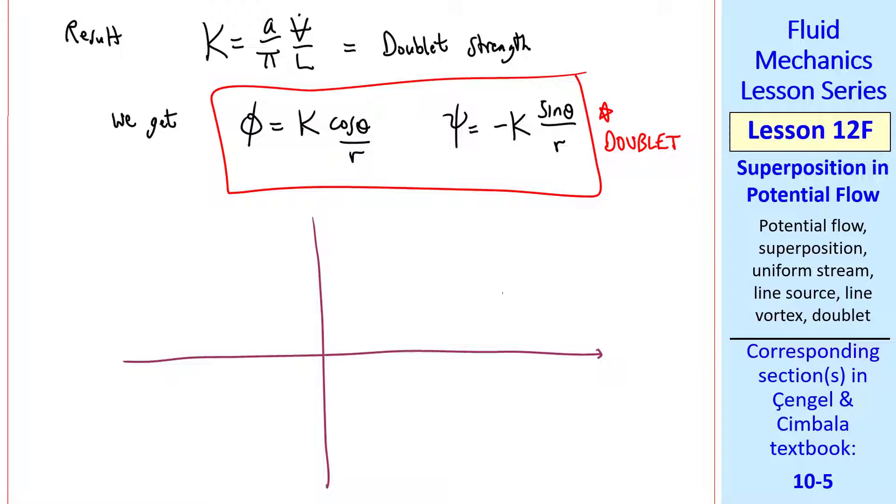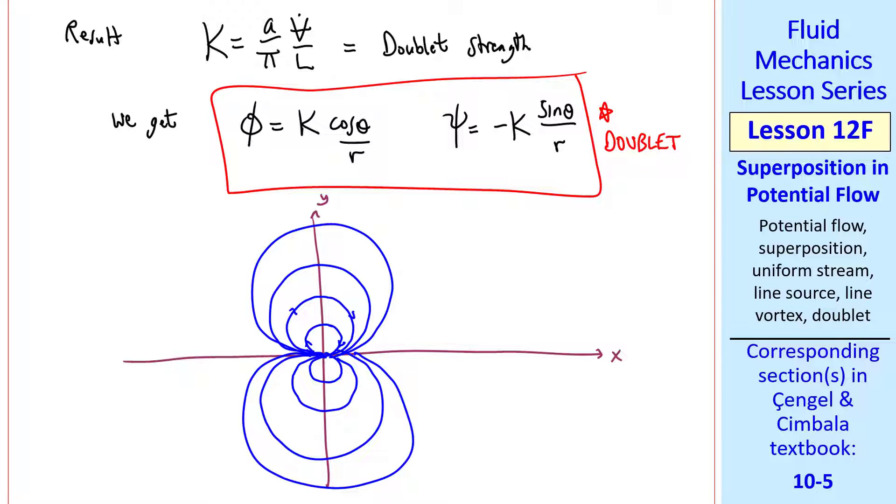This one's the most fun to draw. The streamlines end up being circles. Imagine the flow leaving the source to the left, circling around, and then getting drawn into the sink on the right. Other streamlines are also circles, but they're not concentric. They're circles that are tangent to the x-axis. And below the x-axis, there are mirror images. What about the equipotential lines? Well, they turn out to also be circles, but they're circles tangent to the y-axis. And they're also symmetric, this time about the y-axis. If you draw this accurately, you'll find that these are mutually orthogonal everywhere they intersect. This is the coolest of our flows, and it's called a doublet.